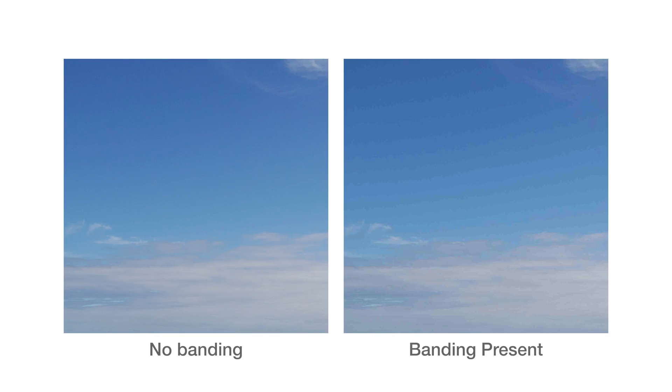Higher color depths also allow you to have higher quality green screen images, and they are less susceptible to color banding, which occurs when the colors available in the color space are not enough to describe the image as you'd see it in real life. Most color banding in both still and motion picture is a result of the various compression methods typically used, however color depth also plays a role, even if it's a minor one.